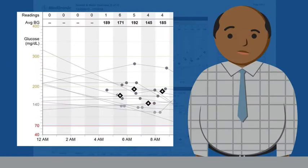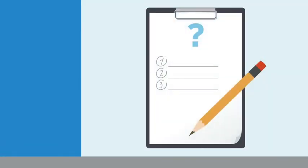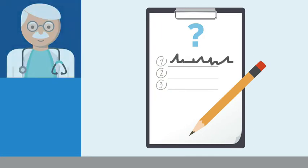Connor had noticed, just today, that lately his morning sugar was high, usually above 180. Now that he can see many days all at once, he realizes he has a pattern of high blood sugars in the morning. Connor makes note of this so he can talk to his doctor about what he found.